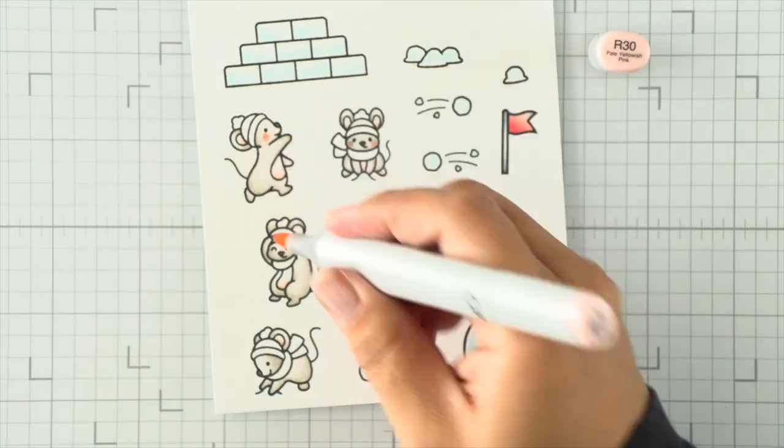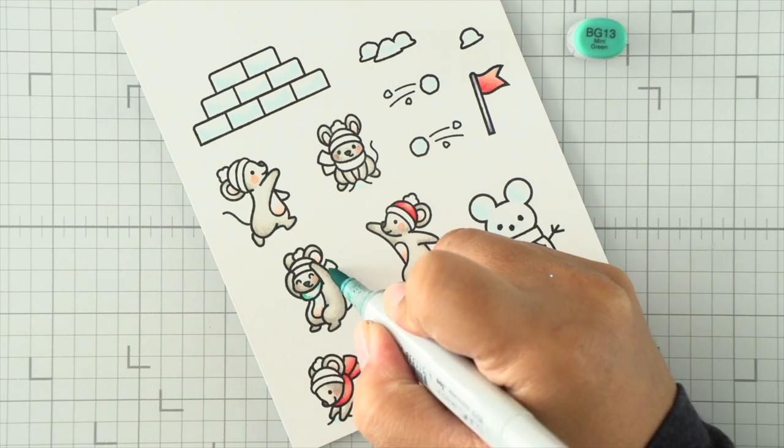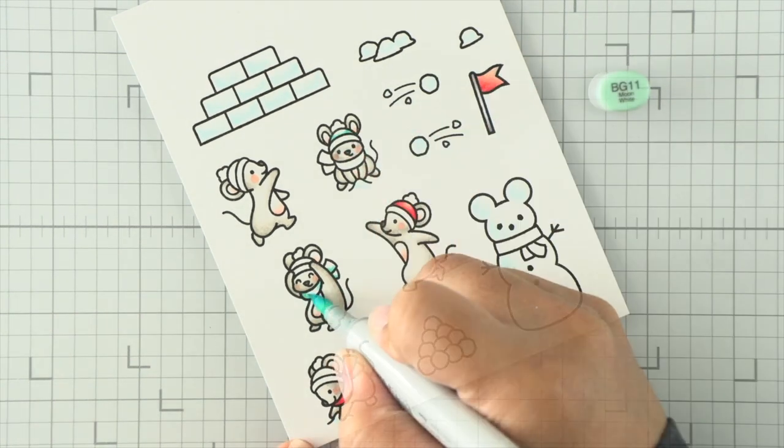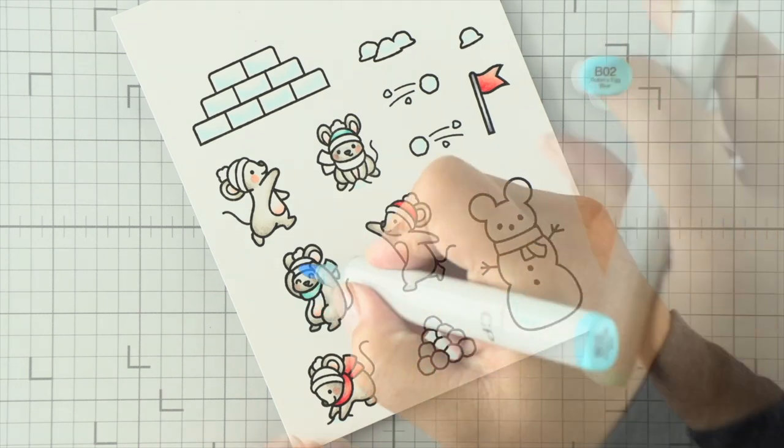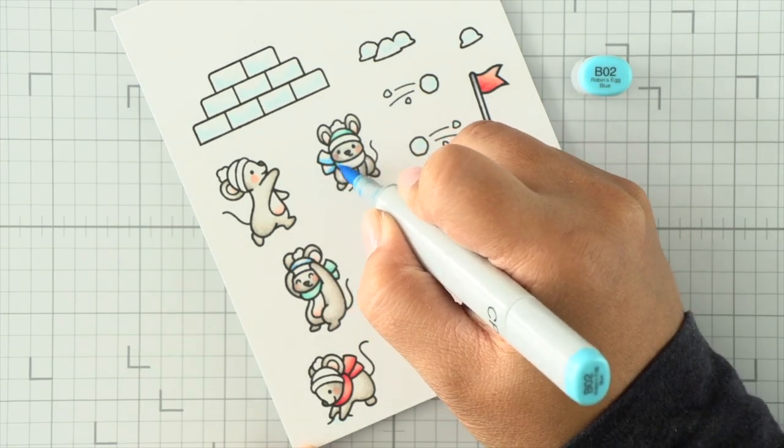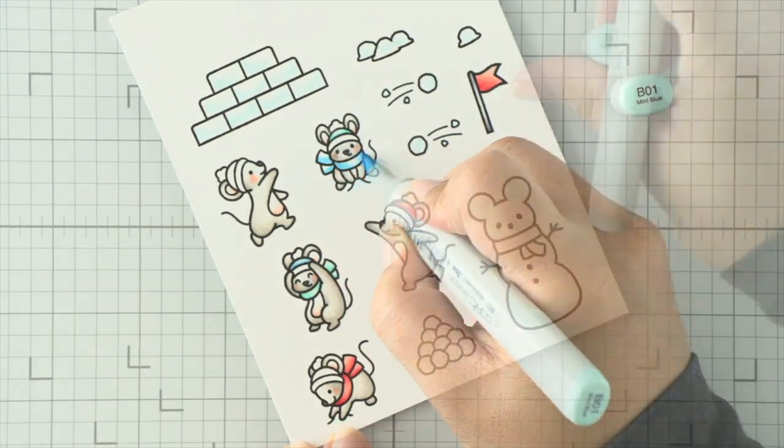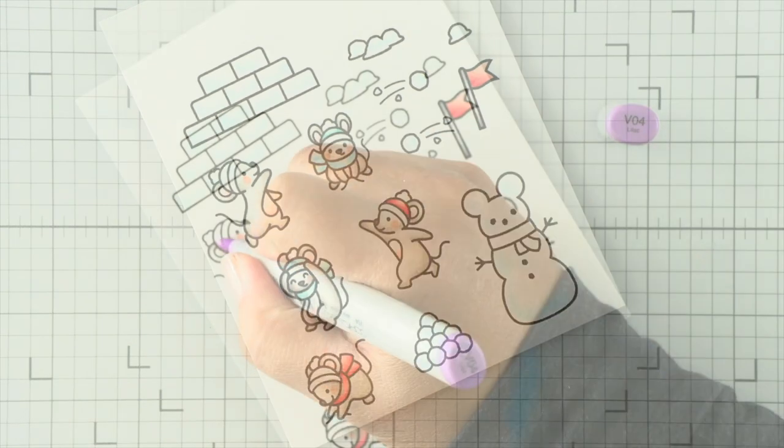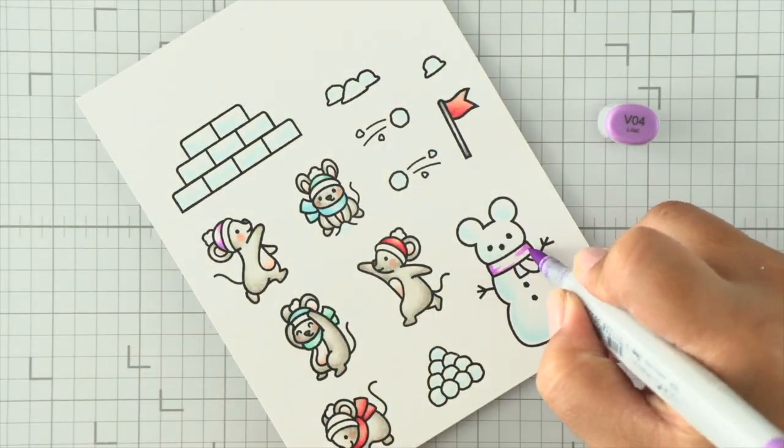On the noses I dotted some W7 for a dark nose. On the hats and stuff I used some light greens, blues, and purples. I did use some reds but I ended up not using any of those red images.